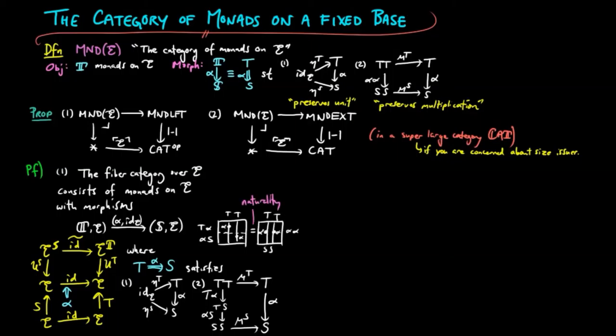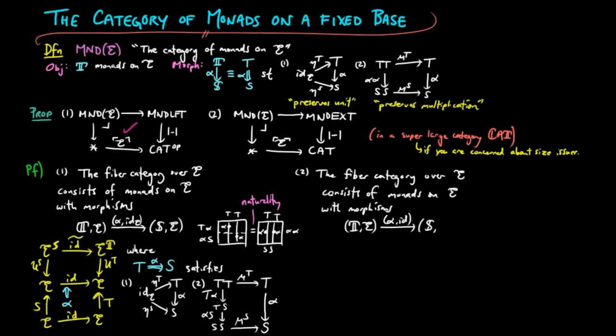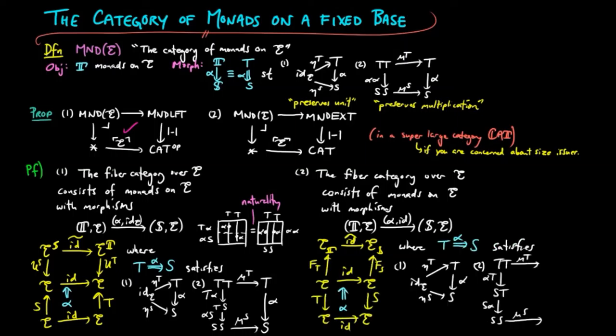Therefore, we see that alpha preserves the unit and multiplication. Similarly for 2, objects in the fiber category are monads on E. Morphisms are the same as giving a natural transformation alpha which satisfies 1 and 2, showing that alpha preserves the unit and multiplication in this case as well. And this completes the proof.